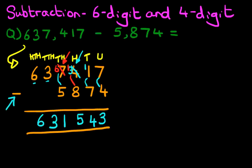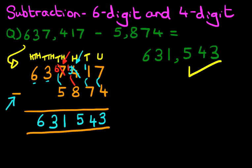And we have our answer. It is 631,543. That is correct. So let's give it a nice big tick. Now even with these large numbers, it's nice and easy if you rewrite it in the vertical format. So that is how we do subtraction of a six-digit number and a four-digit number using the vertical format.